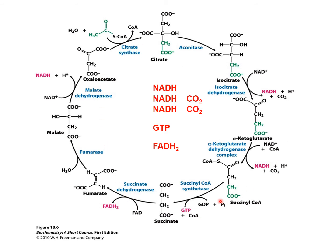Overall in this Krebs cycle, you have the production of 3 NADH, 2 carbon dioxide — which originate from the 2 carbons in the acetyl coenzyme A — 1 GTP, and 1 FADH2. From one glucose you begin with in glycolysis, it becomes pyruvate, then acetyl coenzyme A, and eventually carbon dioxide. This represents the complete oxidation of a glucose molecule, where the high energy electrons are all captured in NADH and FADH2.